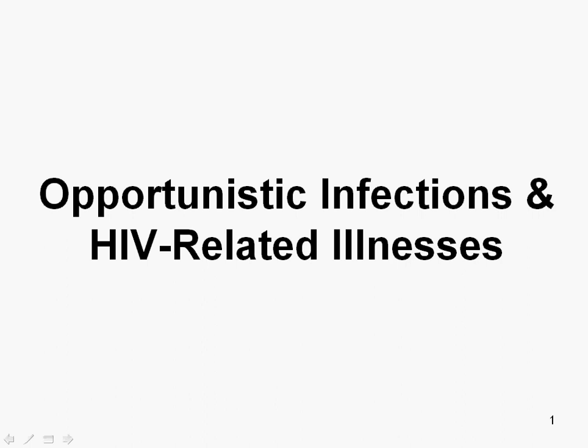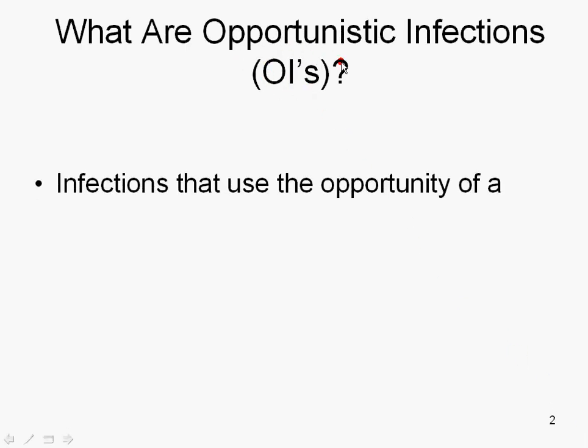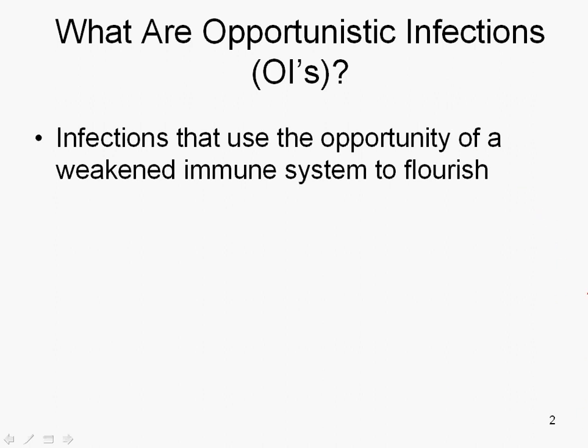Hello and welcome back. This is Val again, and I would like to spend some time with you today talking about opportunistic infections and HIV-related illness. So opportunistic infections — most of the time I'll be referring to them as OIs — and these are infections that use the opportunity of a weakened immune system to flourish.